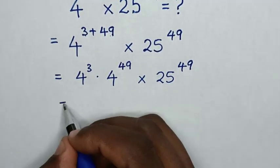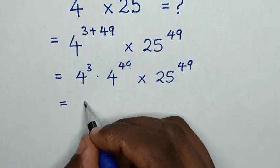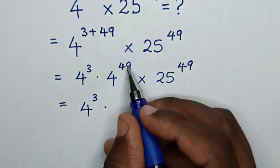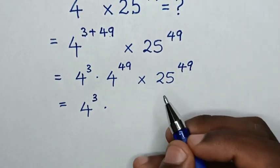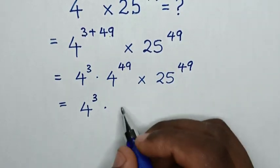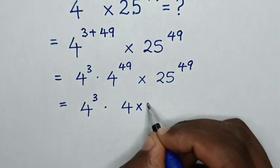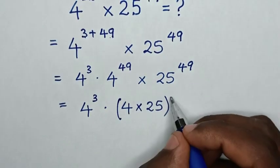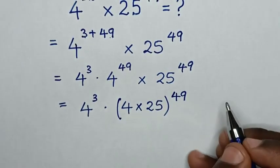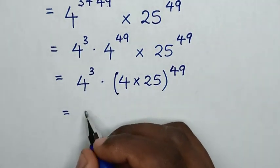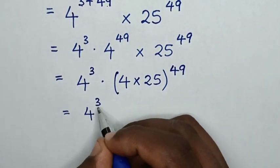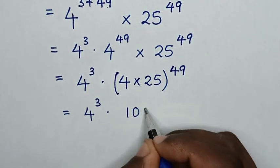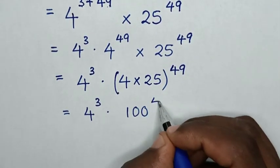In the next step, it will be equal to 4 power of 3, then times — since we have a common power of 49, it will be 4 times 25, bracket power of 49. Then in the next step, it will be equal to 4 power of 3, then times 100 power of 49.